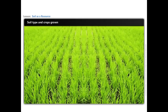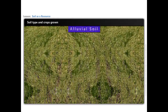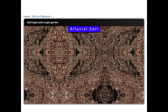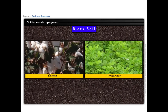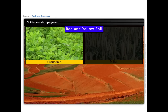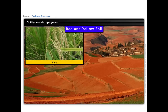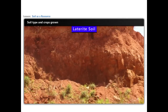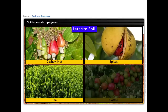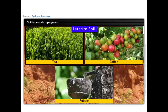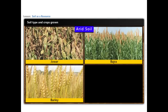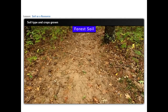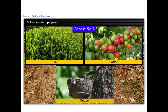We need to know about soil type to grow different types of crops. Rice, wheat, sugarcane and pulses are grown in alluvial soil. Black soil supports cotton and groundnut cultivation. Groundnut, millet, ragi, potato, rice, wheat and sugarcane are grown in red soil. Laterite soil supports cashew nut, spices, tea, coffee and rubber cultivation. Jowar, bajra, barley, gram and wheat are grown in irrigated areas of arid soil. Forest soil is suitable for tea, coffee and rubber plantation.